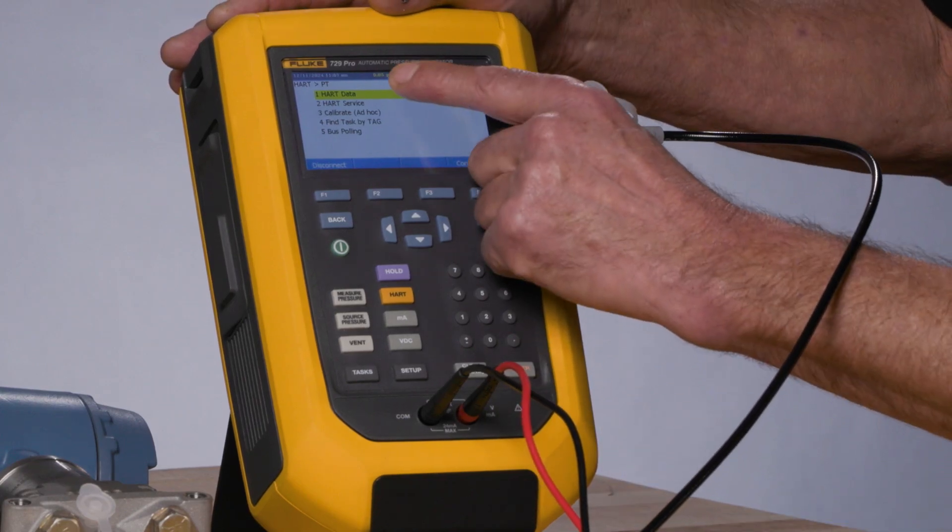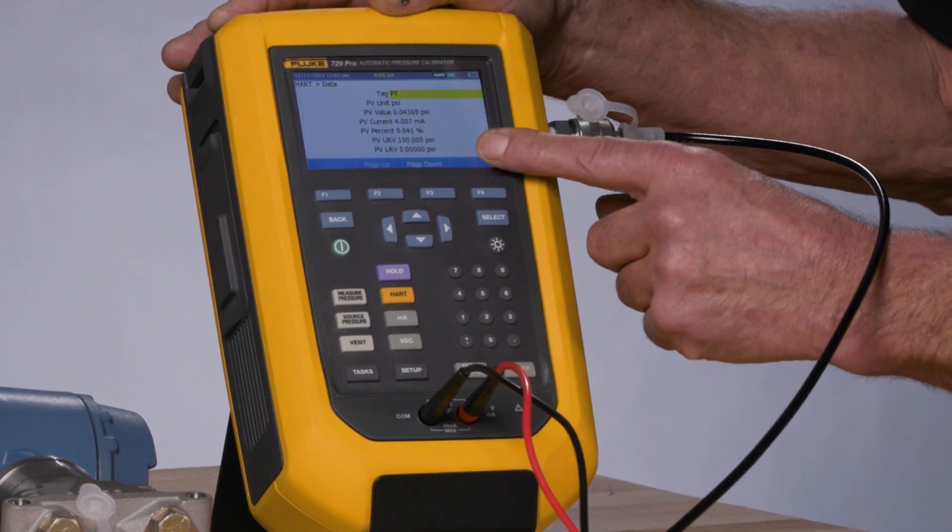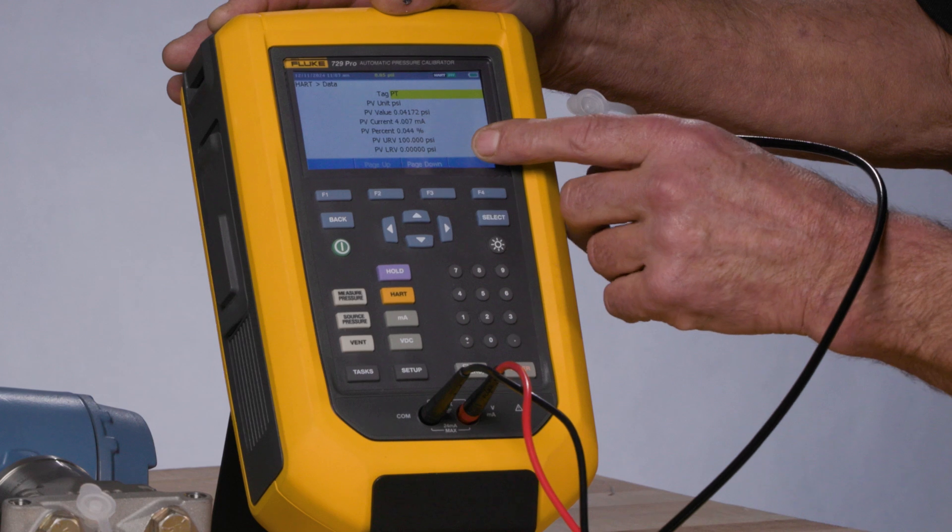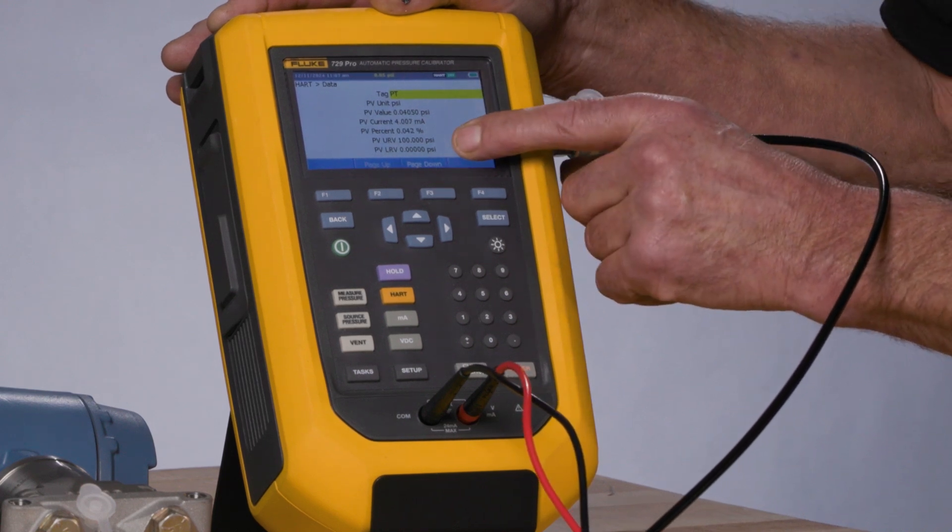So if I select, notice initially we're on HART data. If I select HART data, we can see here how the device is configured via the HART communication, and we can see that this transmitter has a range of 0 to 100 psi.